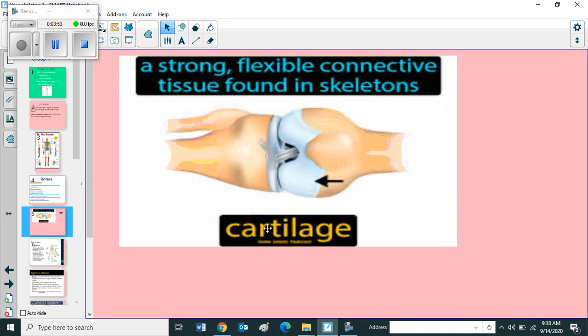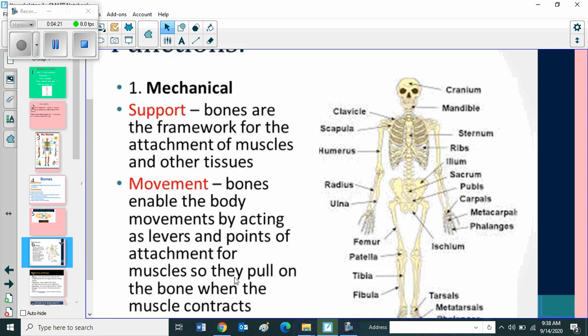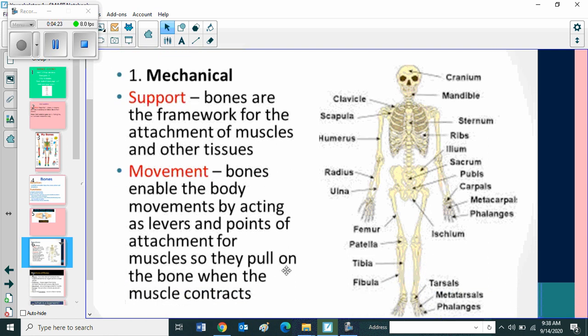Then cartilage. Cartilage is a strong, flexible connective tissue found in skeletons. Then we can go through the functions. First one is mechanical. Supports. Bones are the framework for the attachment of muscles and other tissues. Movement. Bones enable the body movements by acting as levers and points of attachment for muscle. So they pull on the bone when the muscle contracts.